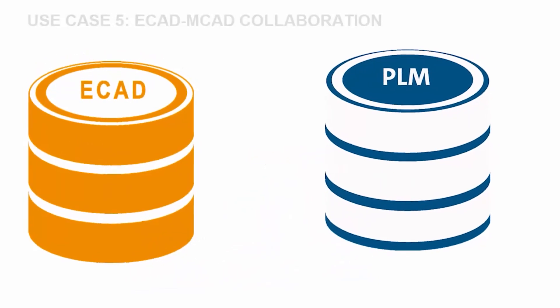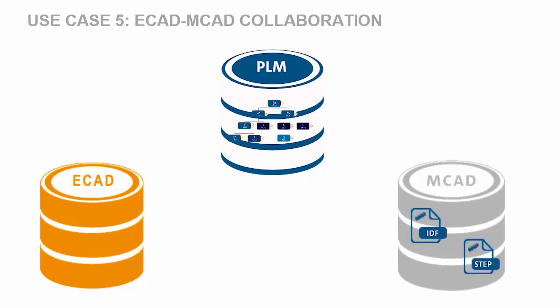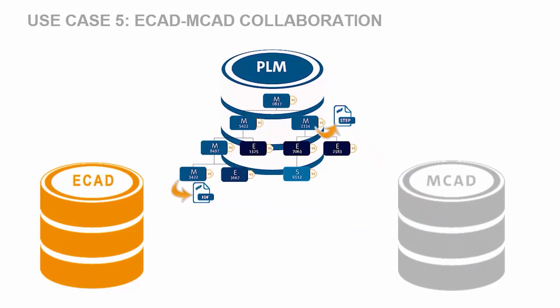Use case 5: ECAD to MCAD collaboration. Exchange data bidirectionally between ECAD and MCAD via PLM, for example IDF and STEP. MCAD engineers can import ECAD geometry into their assemblies and can export data out for reimport back into ECAD. The ECAD and MCAD documents are linked to the same bill of material. You can synchronize electronics and mechanics using exchange data to align components.